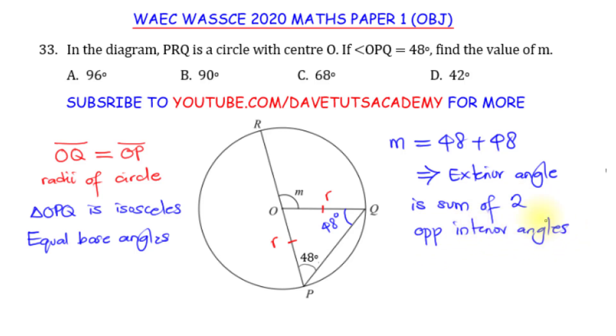So if we want to employ that, we can just say, as good as it is, M will just be 48 plus 48 and that will be 96 degrees. And that will just be option A as a solution to the question.